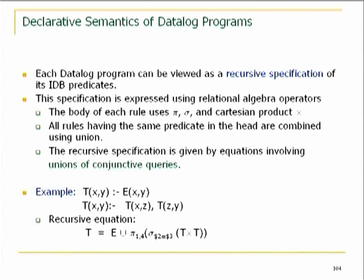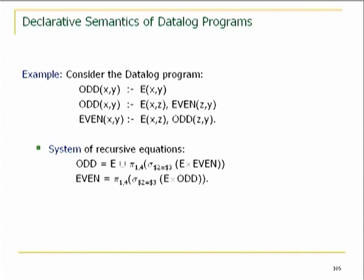You can think of a Datalog program as a system of recursive equations where the operations are operations of relational algebra. For every recursive predicate, you write an equation: take the expression on the right-hand side — that's a conjunctive query, so you can write it in algebra — and combine the right-hand sides of different rules for the same predicate using union. For instance, in the case of transitive closure, we have one recursive predicate T, so this is: T = E ∪ π₁,₄(σ₂=₃(T × T)). That's a recursive equation involving the Datalog program.